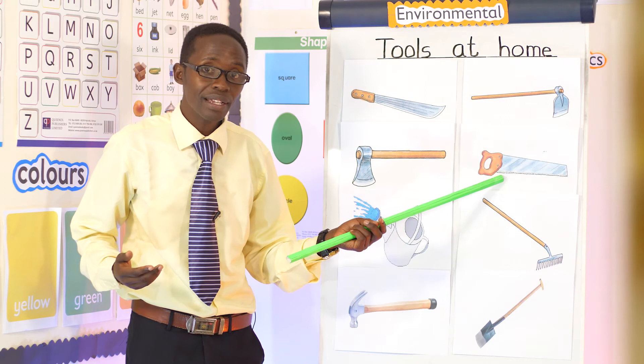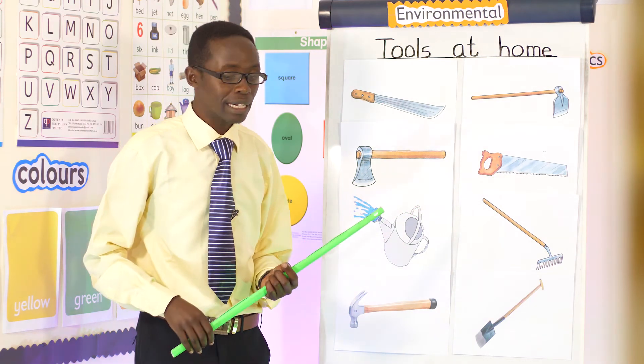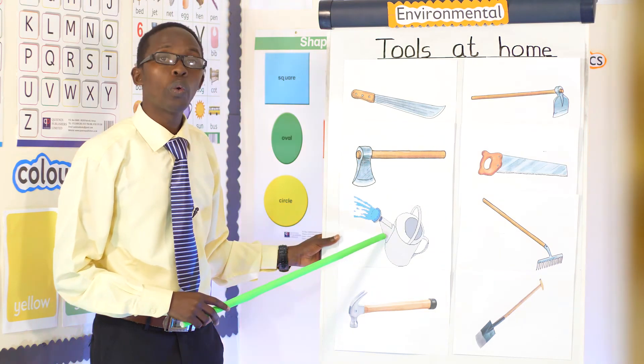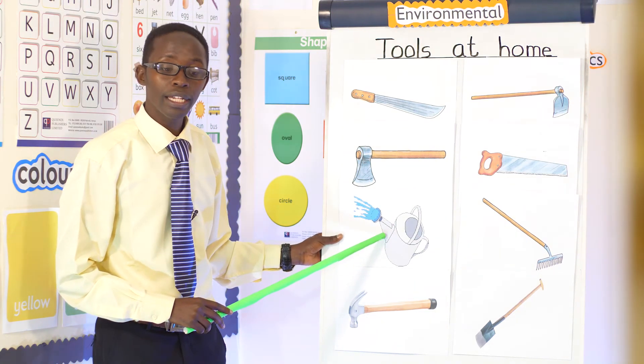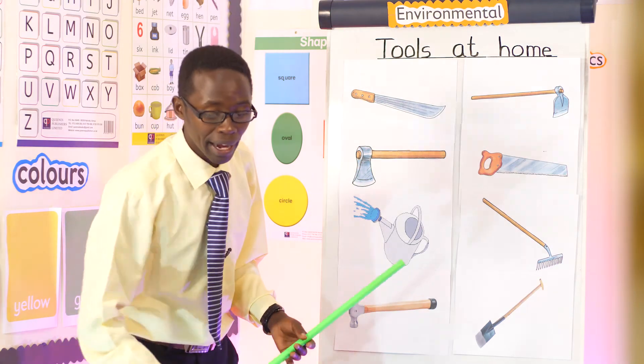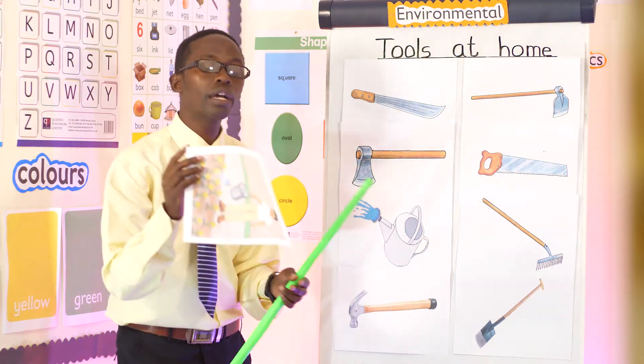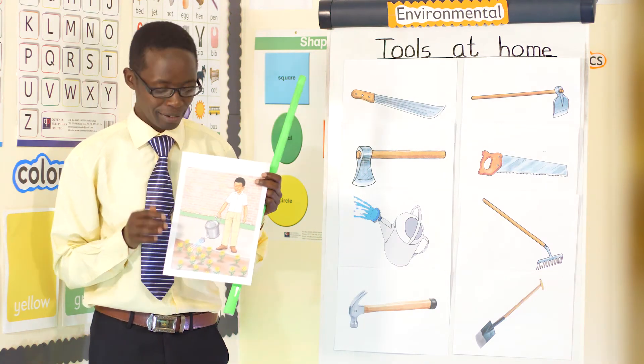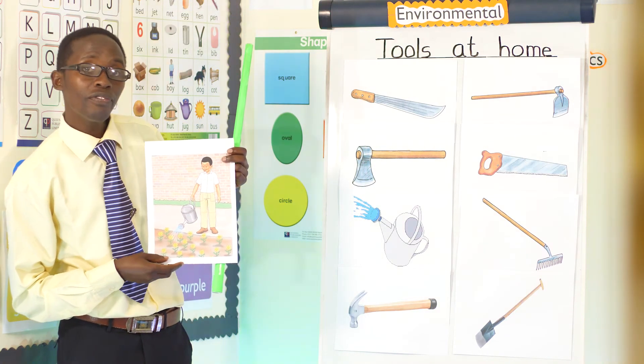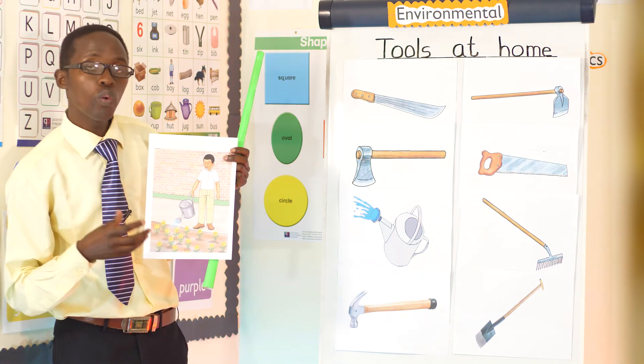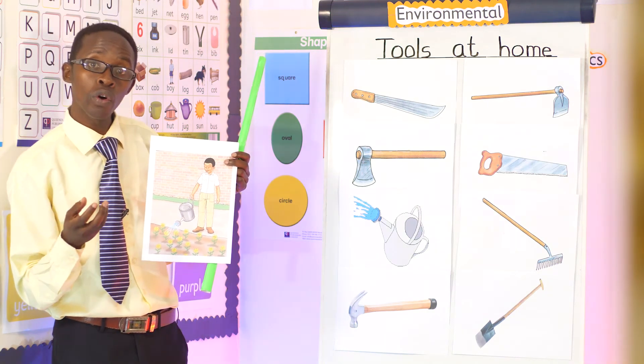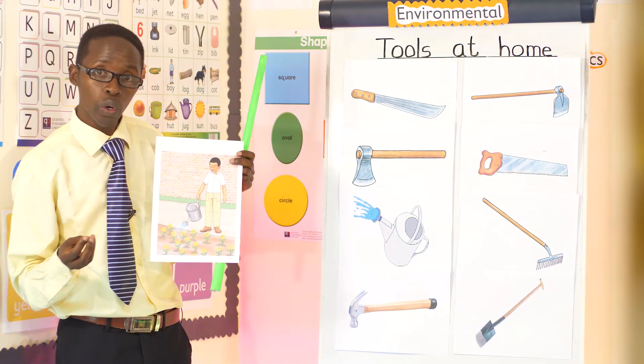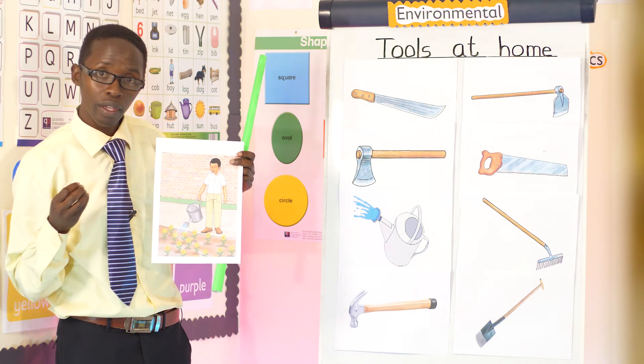Very good, boys and girls. And still we have something else here we call watering can. This one I want to show you a good picture of a person using a watering can. You can see a farmer or even you, if you want plants to grow, you have to water them. If you want flowers to grow, you have to water them.